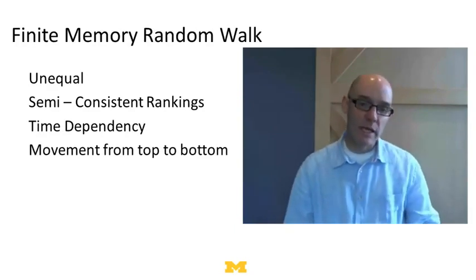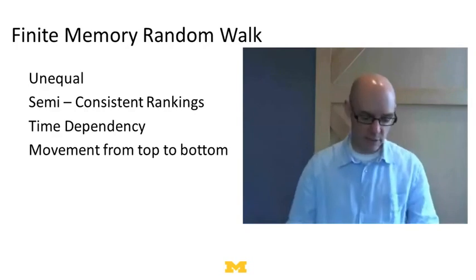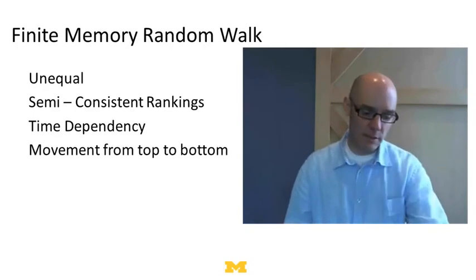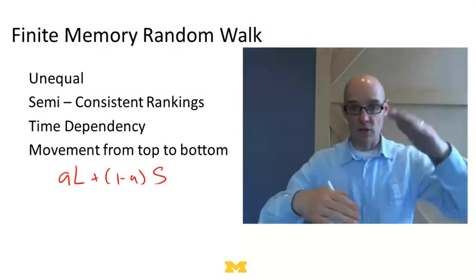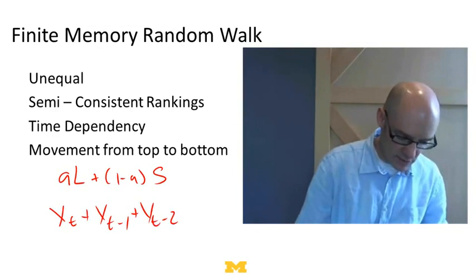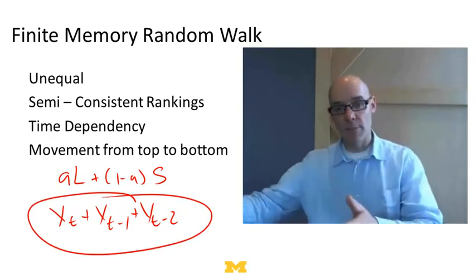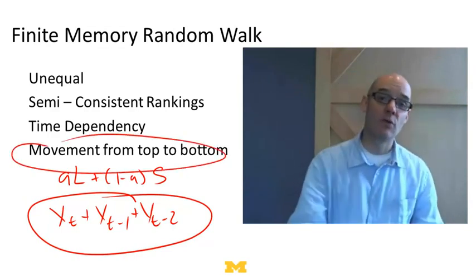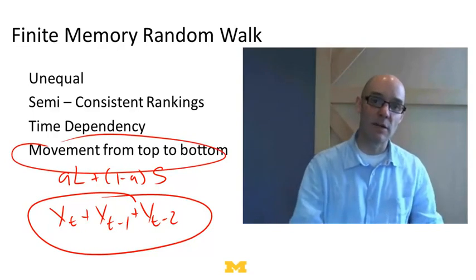In the finite memory random walk model, you'll also have unequal wins and semi-consistent rankings, because getting a bunch of good draws in a row keeps you going. But you'll see a lot more time dependency — it really depends on what you did in the previous period. Where this differs from skill plus luck is you get movement from top to bottom. In skill plus luck, it's like (a × luck) + (1 - a) × skill, so high skill stays high. In the finite memory random walk, your value is XT + XT-1 + XT-2 and so on — after ten periods, those values are gone, chopped off the end of the random walk. So you see more regression to the mean and more movement from top to bottom.